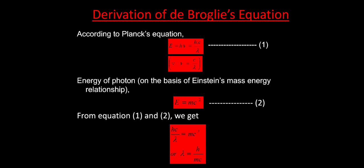From equations 1 and 2, both involve the energy of the photon, so the left-hand sides are equal and therefore the right-hand sides must be equal. Simplifying, we get lambda is equal to h by mc.